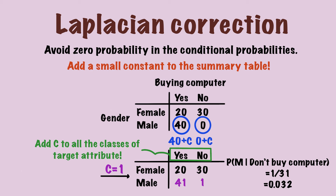You might wonder why we add constant c to two positions. It's actually because we don't want to favor a specific outcome. In this case, the outcomes are buying computer and not buying computer. If we simply add the constant to the position with zero count, then we kind of distort the data by favoring the outcome not buying computer, and that's not what we want, so we add the same constant to both outcomes. Undoubtedly, we still distort the data because the conditional probabilities will change after adding a constant. However, the final decision should not be affected because the probabilities for all outcomes become higher by roughly the same degree.